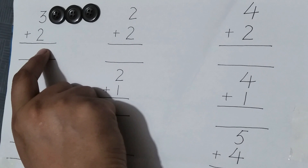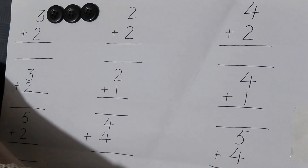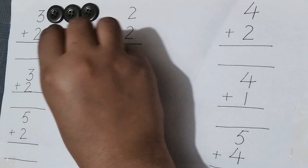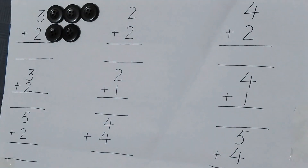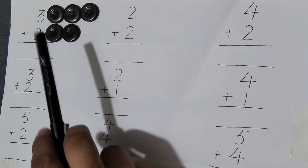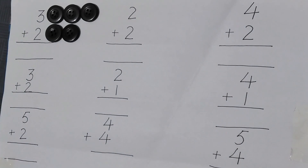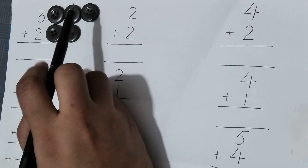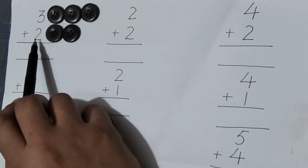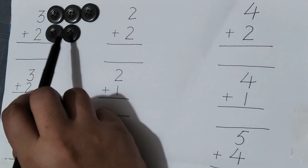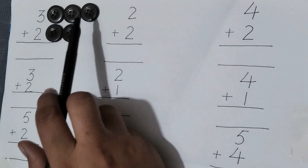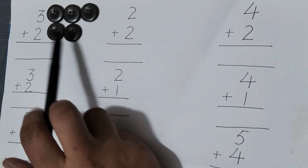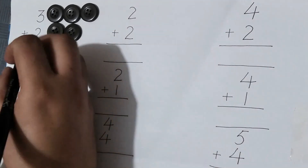Here is two plus two. I will take two buttons — one and two. Now I will count how many buttons there are: one, two, three. Three plus two — one, two. Now we will count the total buttons: one, two, three, four, five. The answer is five.